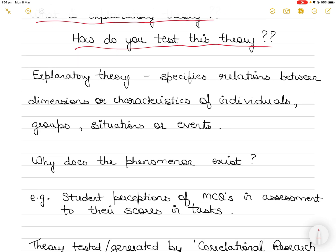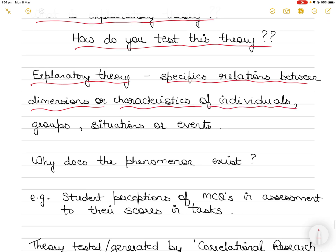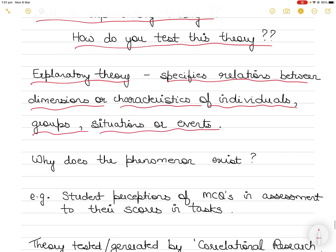So firstly, you should know that explanatory theory specifies the relationships between dimensions or characteristics of individuals, groups, situations, or events. I will give you an example later on. Just remember this definition, because this theory explains why and the extent to which one phenomena is related to another phenomena.